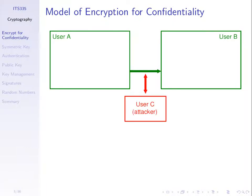We have some attacker or malicious user C, and we assume that C can observe what's being sent from A to B. We cannot stop them from doing that. If it's sent through a Wi-Fi network, it's quite easy to monitor communications remotely, or maybe the attacker has physical access to the wiring and can intercept copies of the signals. So it's very hard to stop attackers from observing what's sent between two entities.